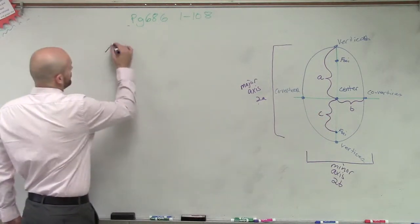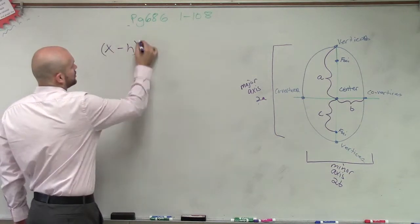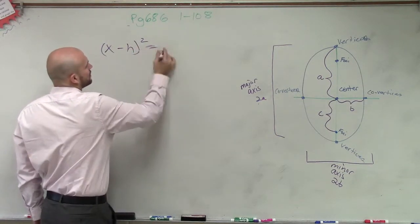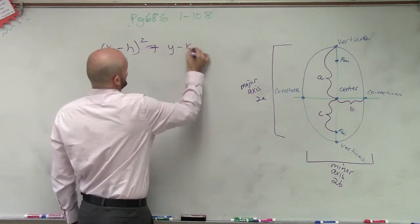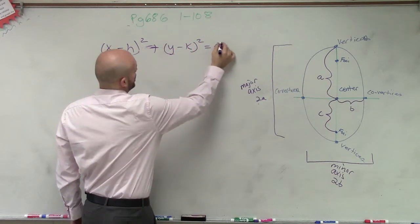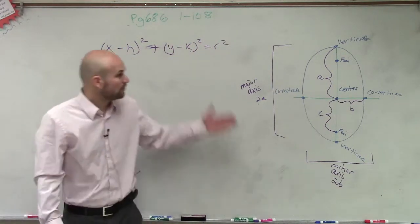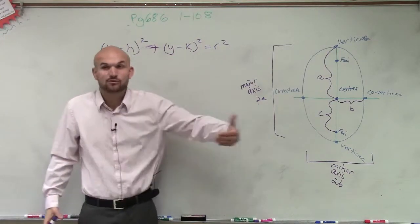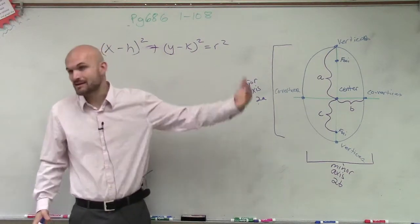So let's look back at the standard form of a circle. x minus h squared plus y minus k squared equals r squared. Now we have r because r is equal for everything. We have the same radius.